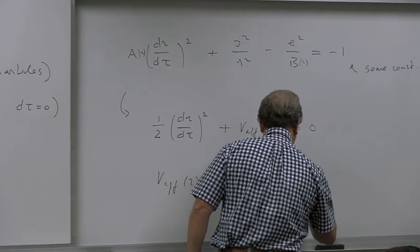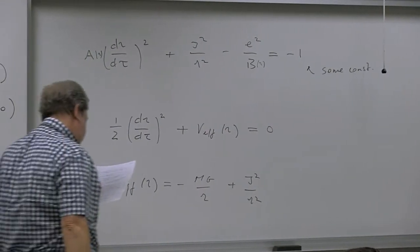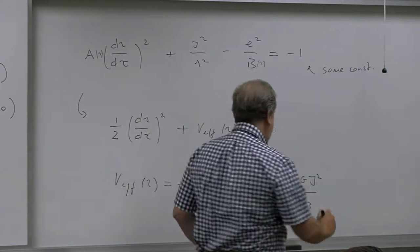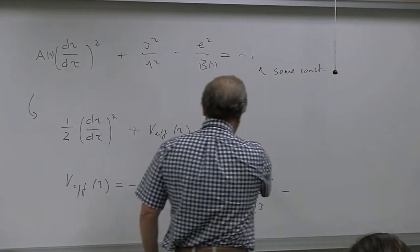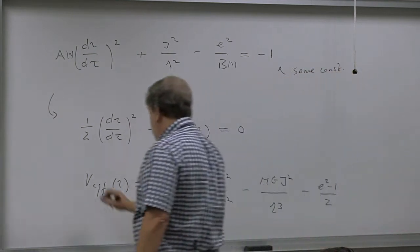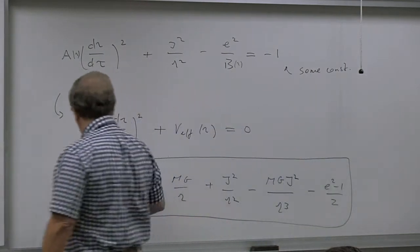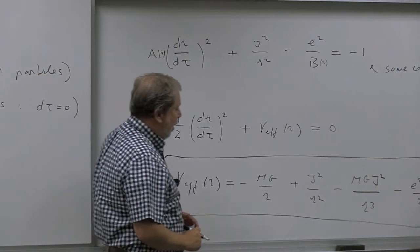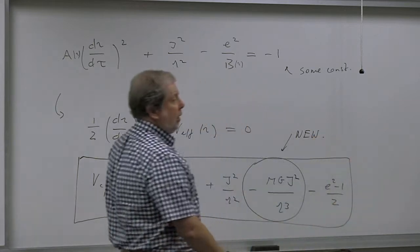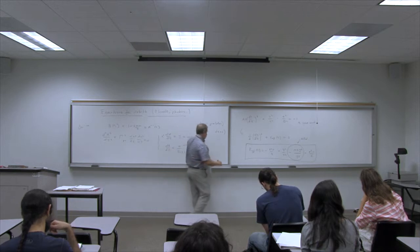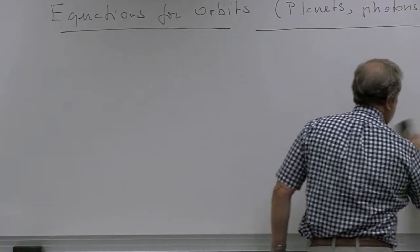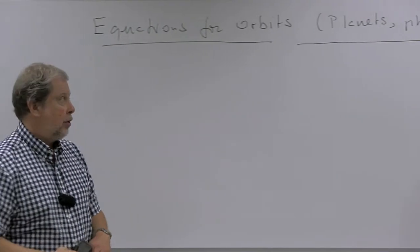There is a new term — the -MGj^2/R^3 term — that arises because of the relativistic correction. This term is new compared to Newtonian gravity. The interesting part is its dependence on R, and we will see that this term leads to the precession of the perihelion of Mercury.